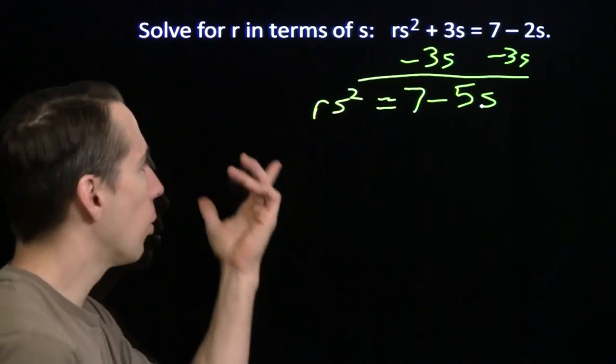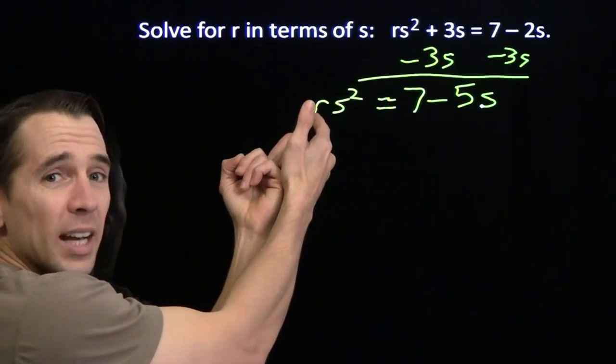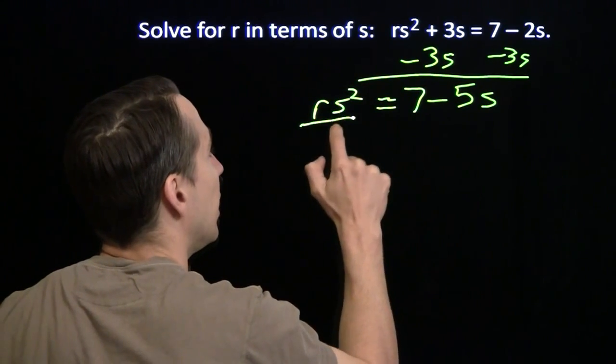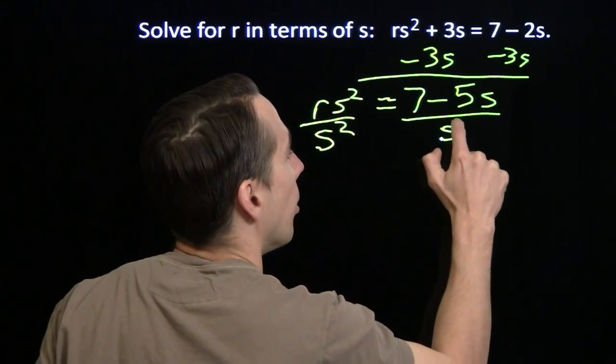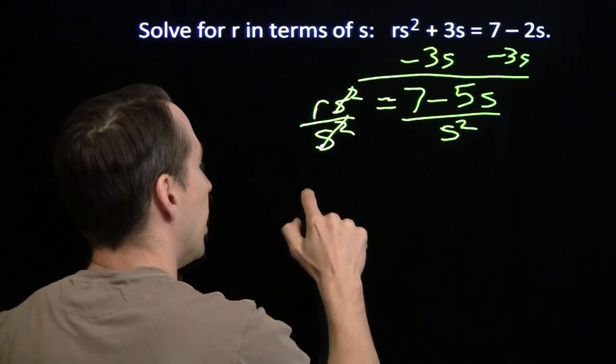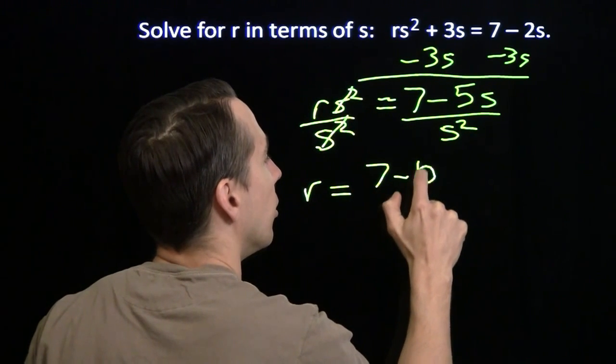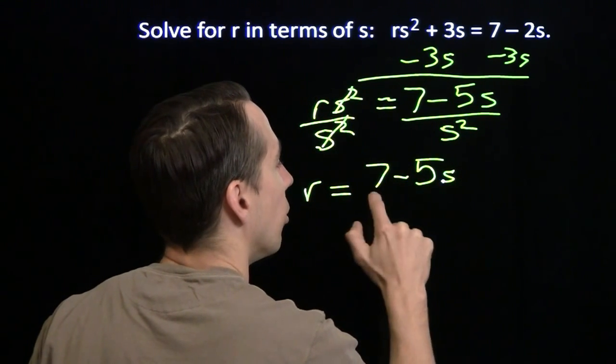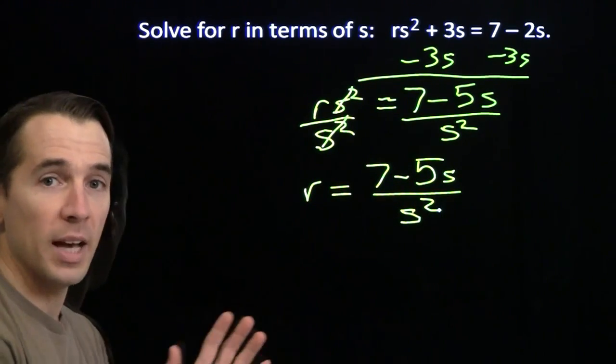And then we need to isolate the r. We don't have a constant, a coefficient here that's multiplied by r, but we do have an s squared. And we can take care of that by dividing both sides by s squared. These two s squareds cancel, and we're left with r equals 7 minus 5s all over s squared. And once again, we've solved for r in terms of s. Same thing we've been doing all along, we're isolating the variable.